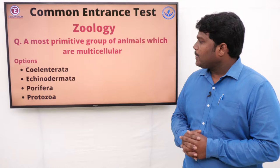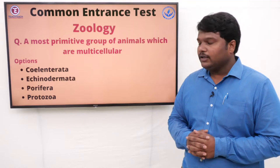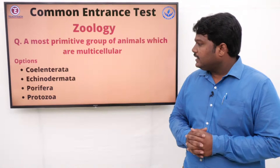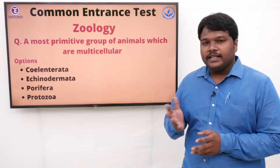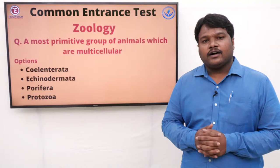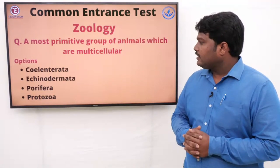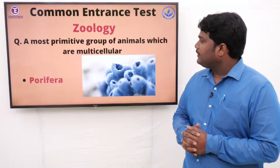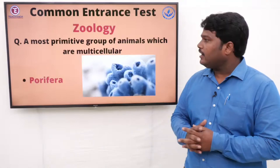Question 1: The most primitive group of animals which are multicellular. Options: A) Coelenterata, B) Echinodermata, C) Porifera, D) Protozoa. If you know the answer, you can type it in the comment section of our YouTube channel. The answer for the most primitive group of animals which are multicellular is Porifera. Porifera is the multicellular organism.